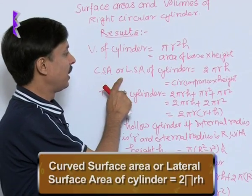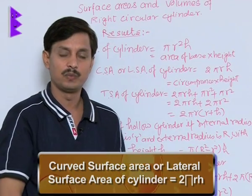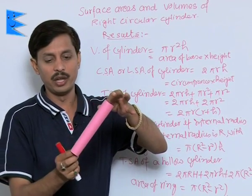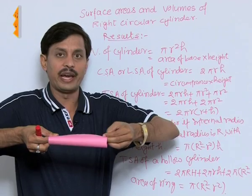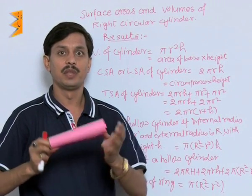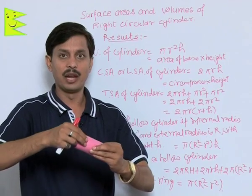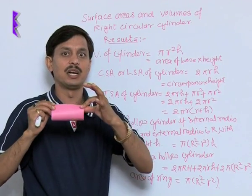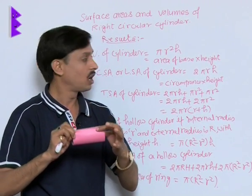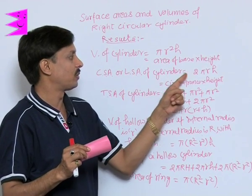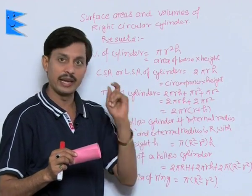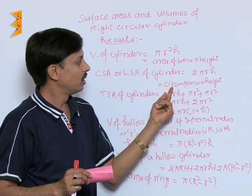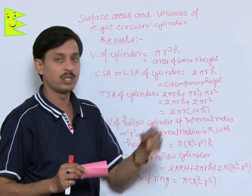The curved surface area, also called lateral surface area, of a cylinder is the rolled part — only the rounded side, not the top or bottom. Curved surface area equals 2πrh, where 2πr is the circumference of the base. So curved surface area can also be written as circumference multiplied by height.